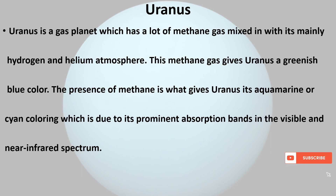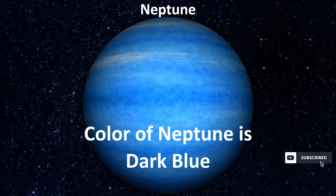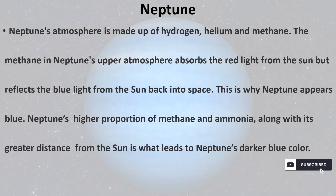The color of Neptune is dark blue. Neptune's atmosphere is made up of hydrogen, helium, and methane. The methane in Neptune's upper atmosphere absorbs red light from the Sun but reflects blue light back into space, which is why Neptune appears blue. Neptune's higher proportion of methane and ammonia, along with its greater distance from the Sun, is what leads to Neptune's darker blue color.